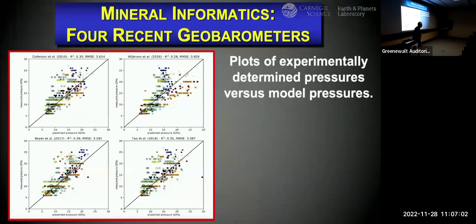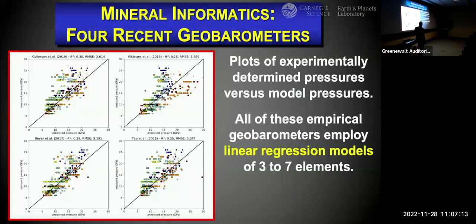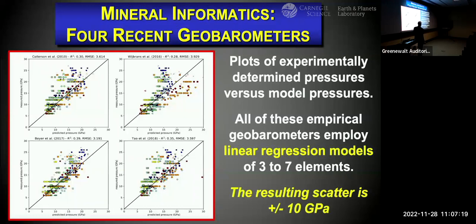A lot of people have tried this going back to 2010 — there are four different geobarometers that were proposed. They all use linear regression models from three to seven elements, and the resulting scatter is about plus or minus 10 GPa on these plots, though there is a general trend.